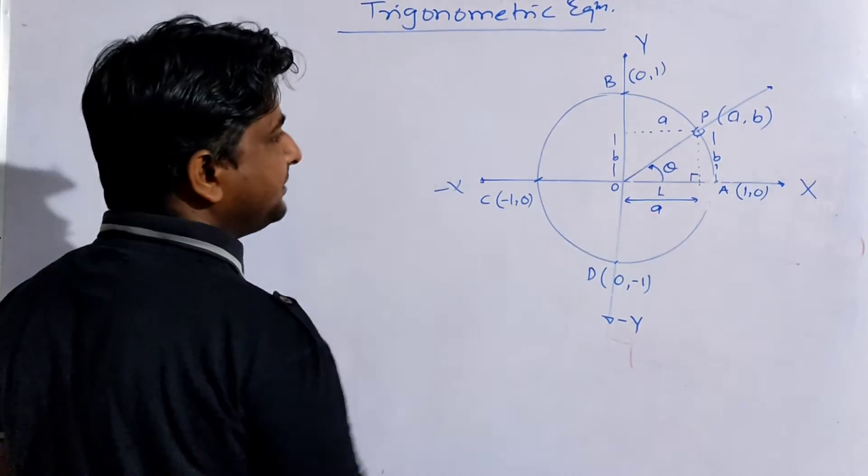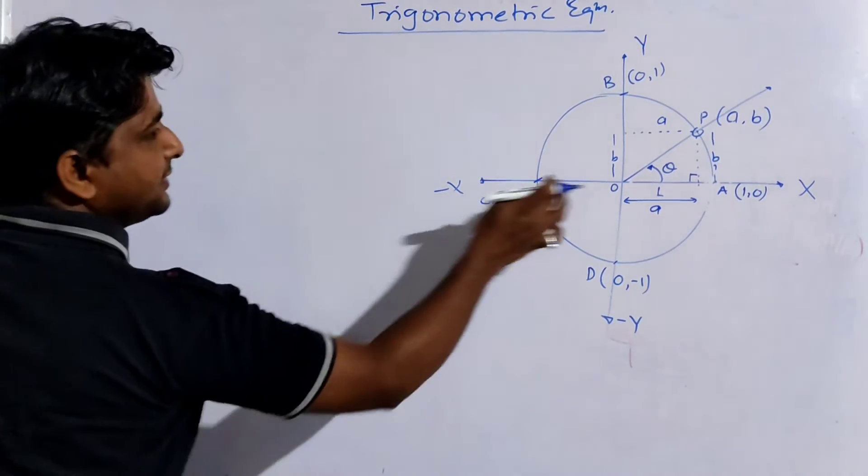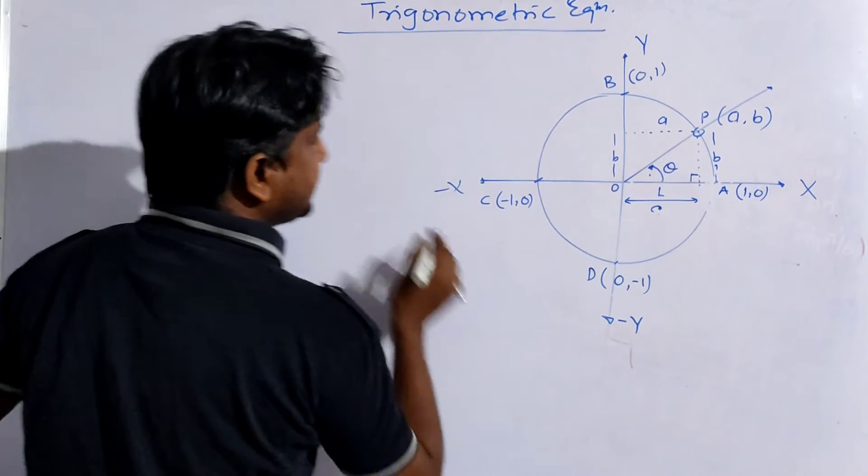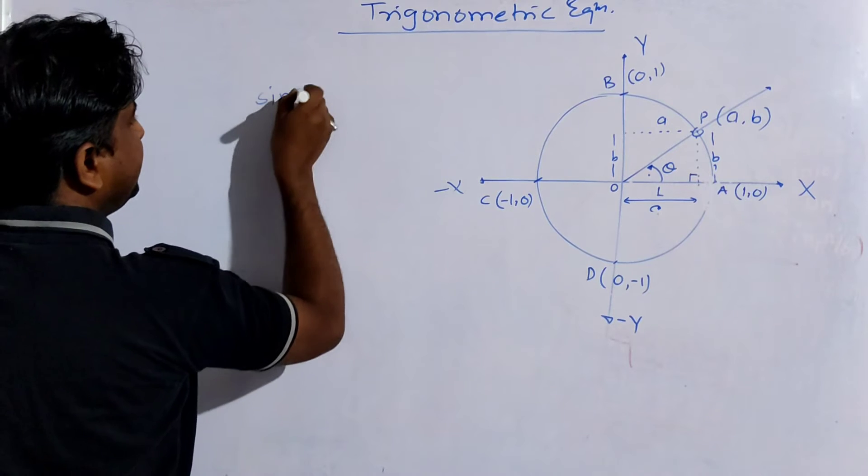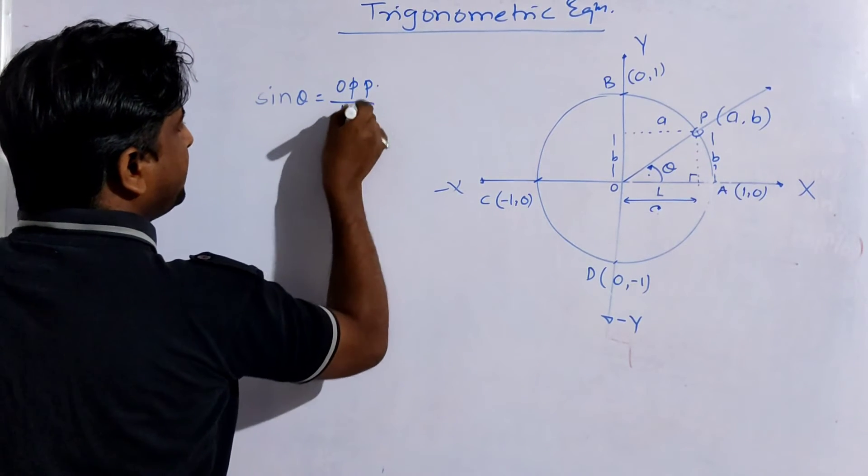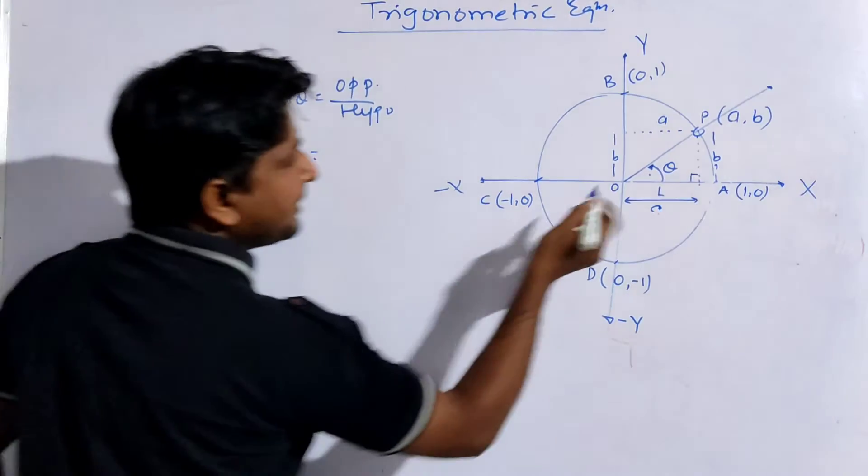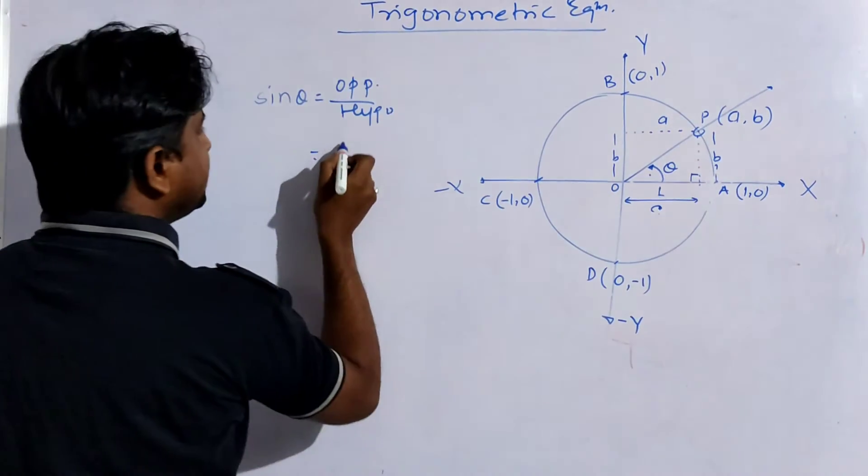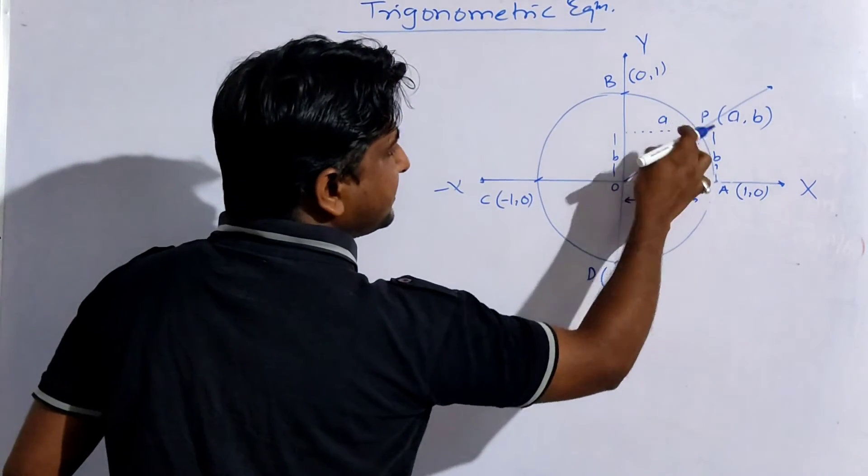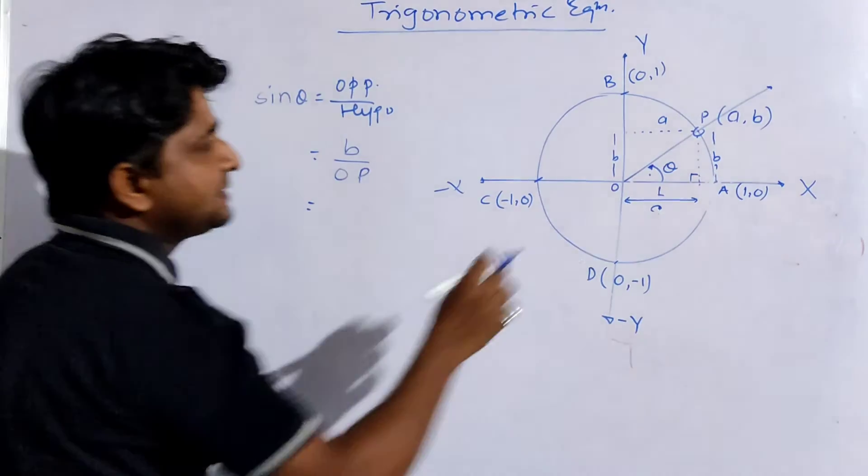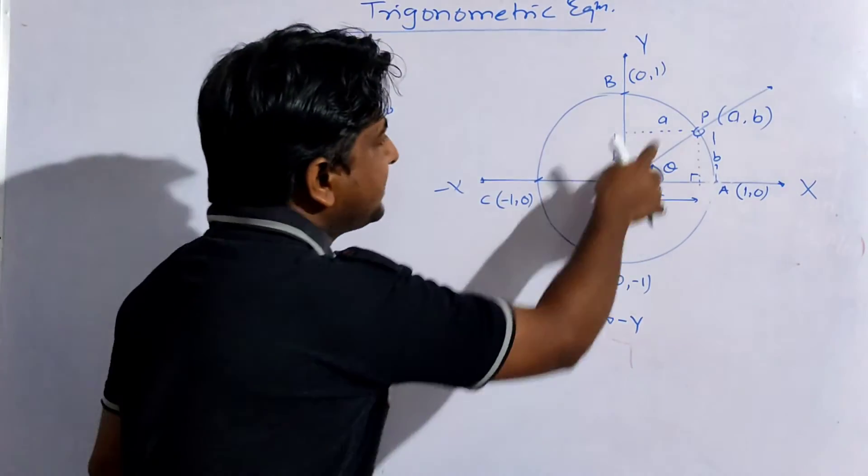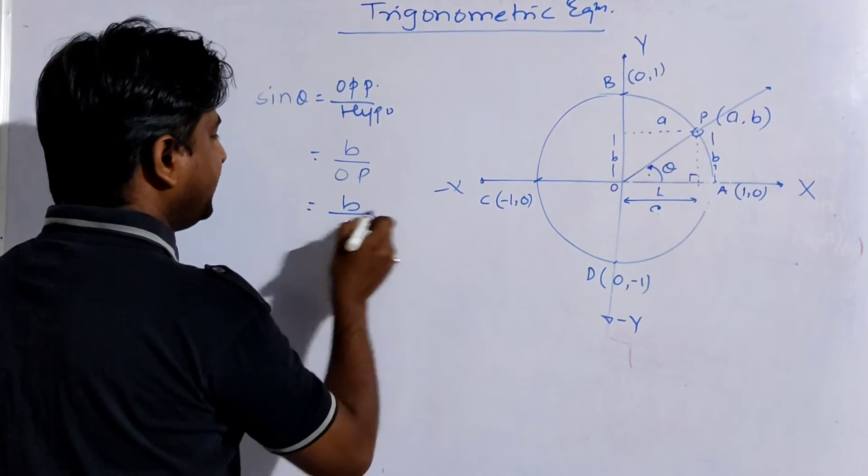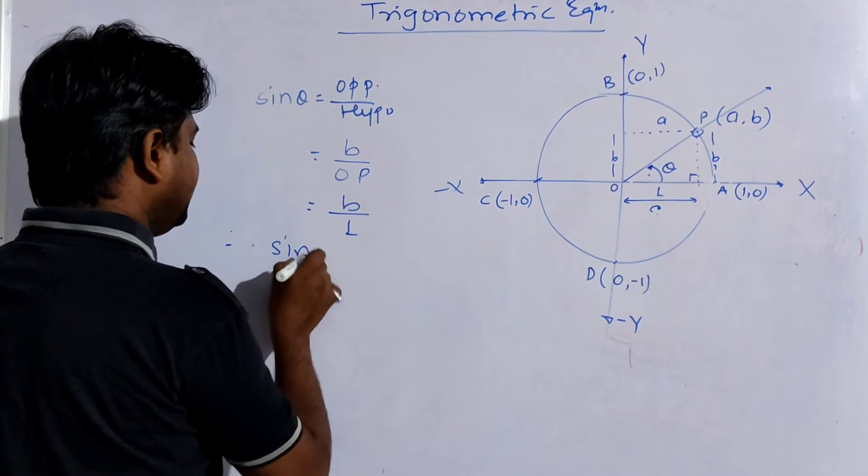Now the perpendicular distance is basically sin theta and cos theta. From this, remember this is an acute angle. So for this angle we will be finding out sin theta and cos theta. As we said in class 10, sin theta is equal to opposite side upon hypotenuse. Now from this angle, this is the perpendicular, which is nothing but small b. And the hypotenuse is OP. But this OP is a radius also, and the circle is a unit circle, meaning its radius equals 1. So we can write this as b upon 1, which means the value of sin theta is equal to b.